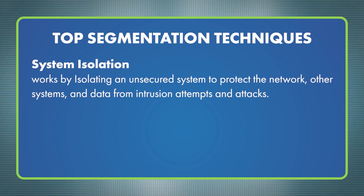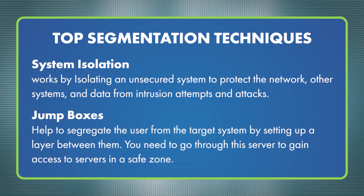System isolation works by isolating an unsecured system to protect the network, other systems, and data from intrusion attempts and attacks. Jump boxes, or jump servers, help segregate the user from the target system by setting up a layer between them. You need to go through this server to gain access to servers in a safe zone. Jump servers can be useful for managing Active Directory and domain controllers in a midsize establishment.